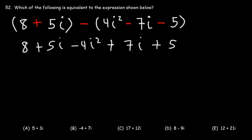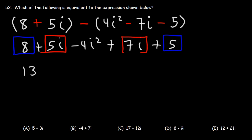Now let's combine like terms. We can add the constants: 8 plus 5 is 13. Next we can combine 5i and 7i — that's going to be 12i.